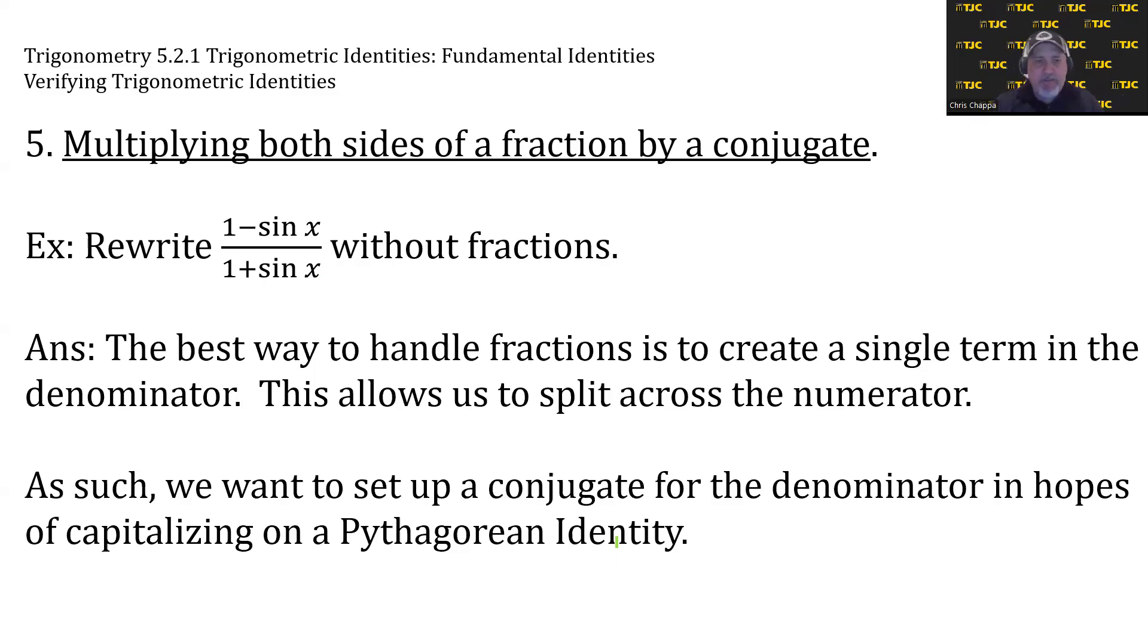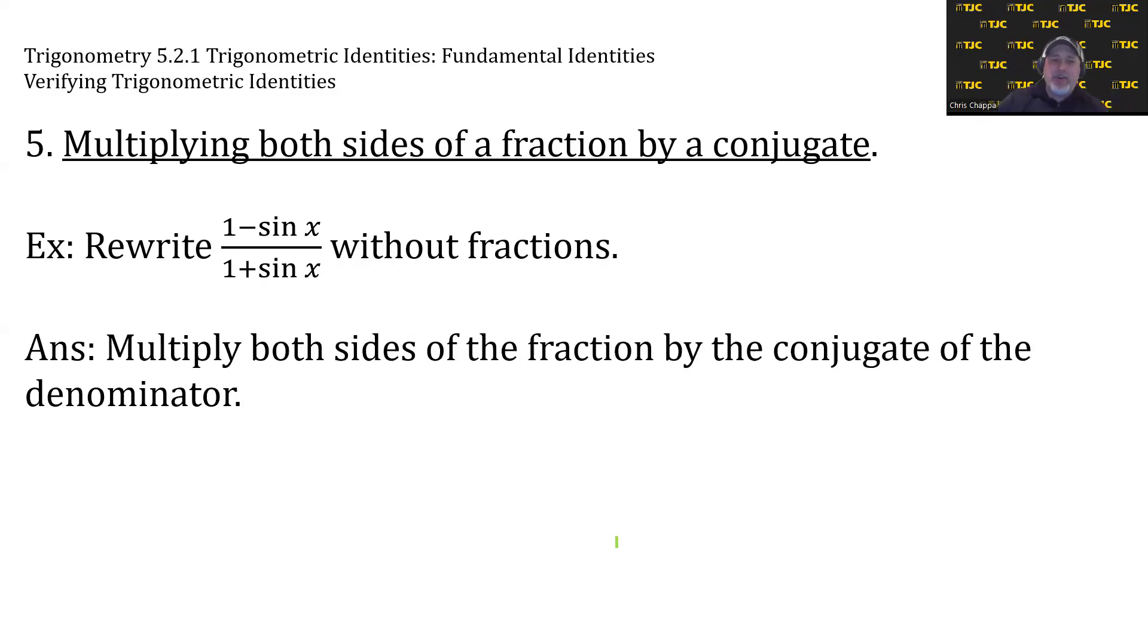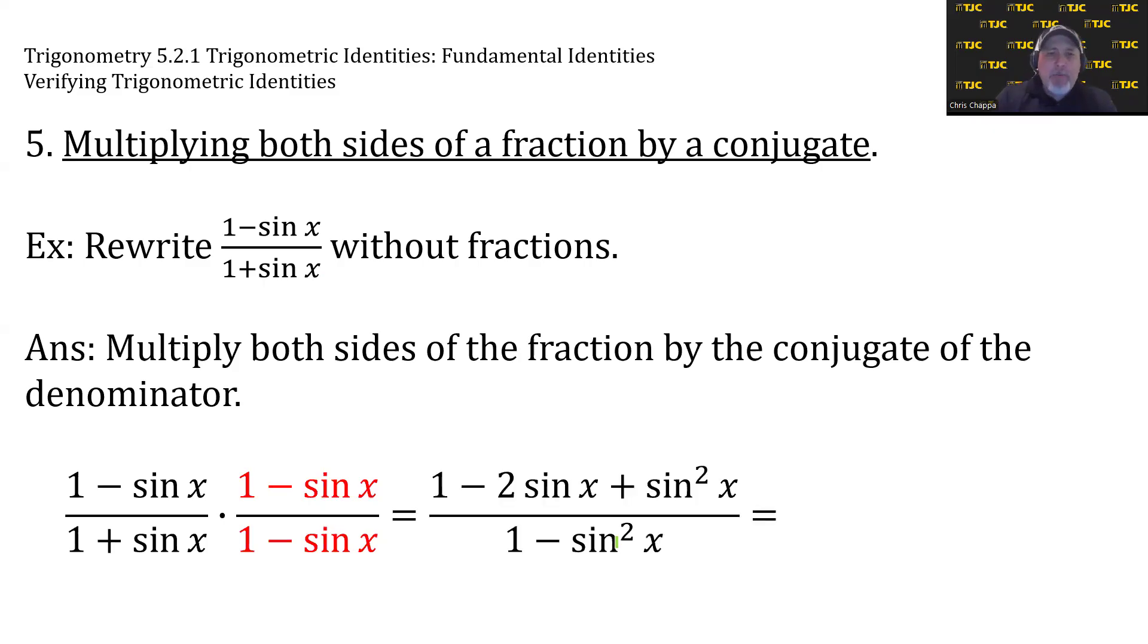So we're going to hit the denominator with the conjugate. We're going to multiply both sides of this fraction by the conjugate of the denominator. The denominator is 1 + sin x. Its conjugate is 1 - sin x. If we foil both of those, on the top, we would get 1 - 2 sin x + sin²x. And on the bottom, we would get 1 - sin²x. But 1 - sin²x is a variation of a Pythagorean identity, and that's equal to cos²x.